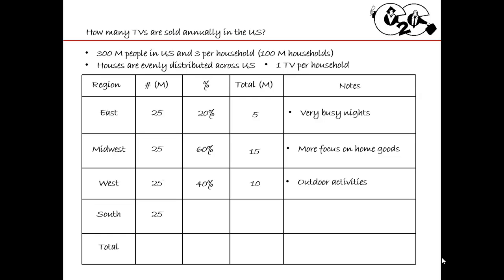The last group is the South. I'll say they have bigger homes and people are probably home at night. So of these 25 million, I'll say a good amount — 60%, which is again 15 million. I'm reusing numbers to make my life easier. Adding them up: 5 plus 15 is 20, plus 10 is 30, plus another 15 gives me 45.